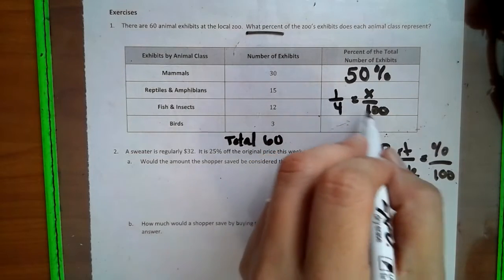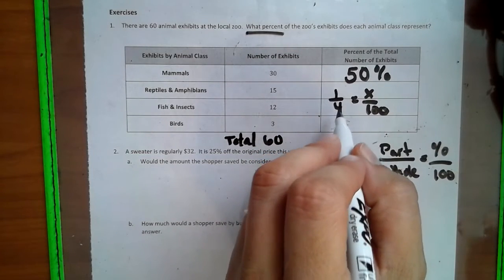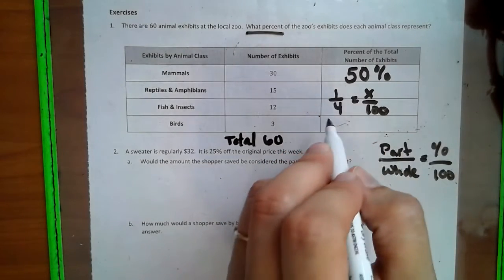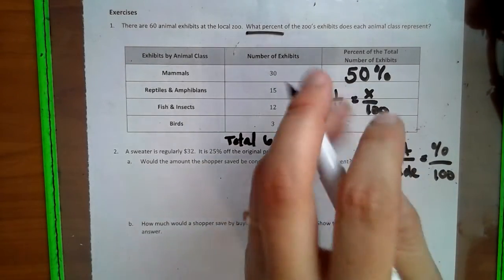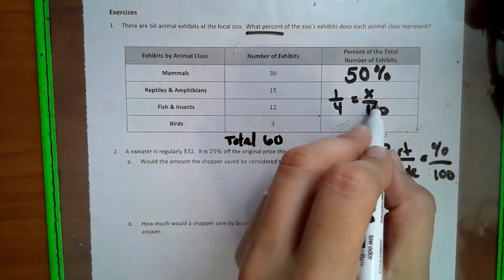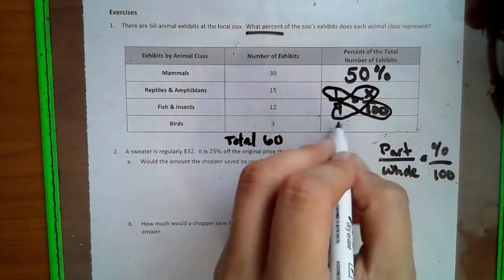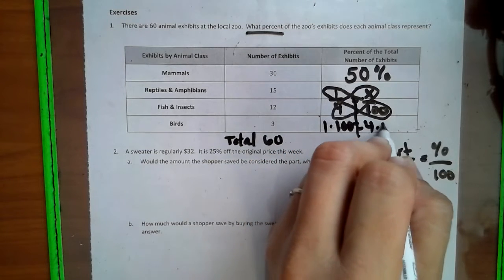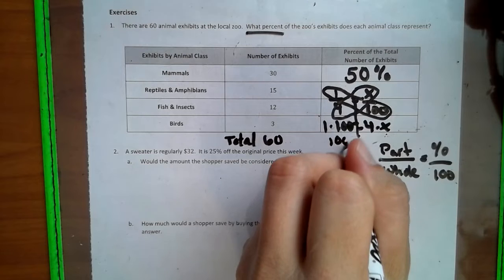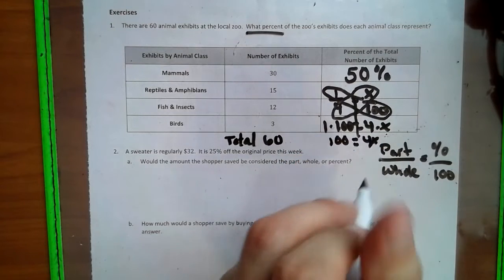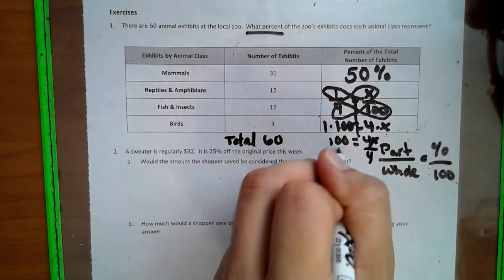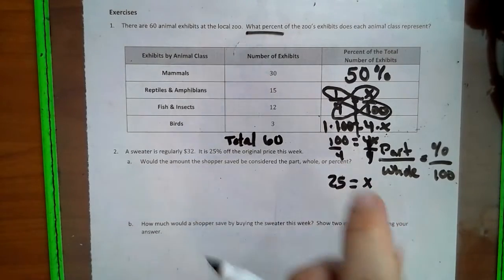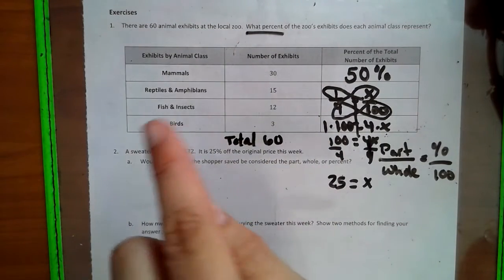If you didn't know that, the same way we just had it, you can still do the math. Going 15 times 100 equals 60 times x. You can still do that. This just makes it a little bit easier to deal with. So we have 1 times 100 equals 4 times x. 100 equals 4x. Divide by 4. Divide by 4.